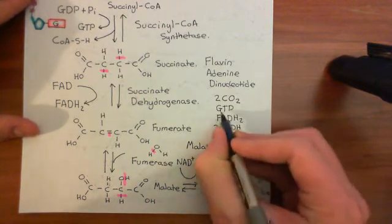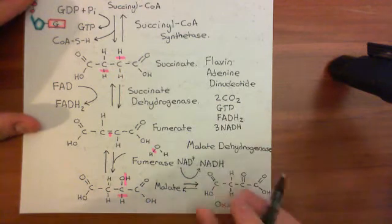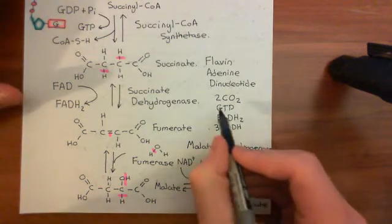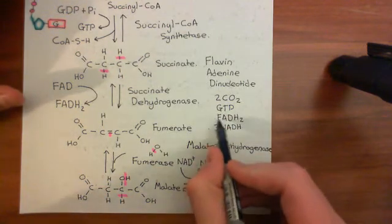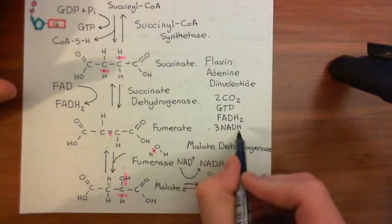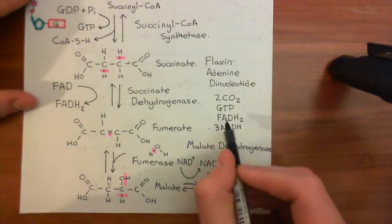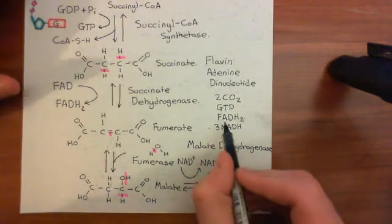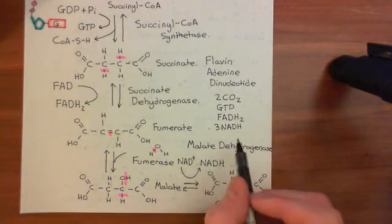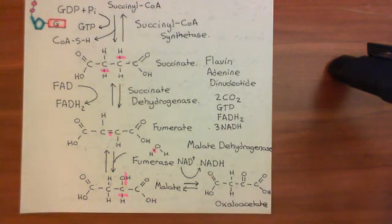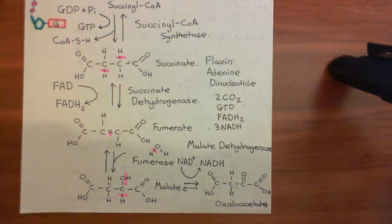Now, firstly, the GTP can be used as a direct energy source, so we've generated that. That's very nice. And FADH2 and NADH are then going to be used by the electron transport chain complexes to produce ATP later on. And we'll continue that discussion in the next video, which will be on the electron transport chain.